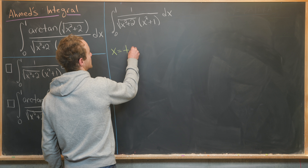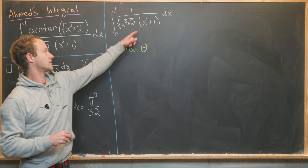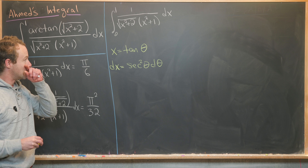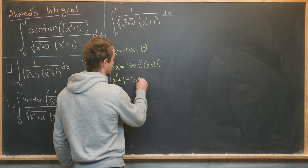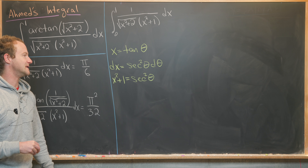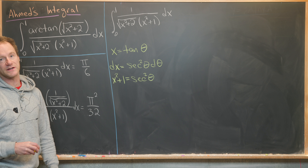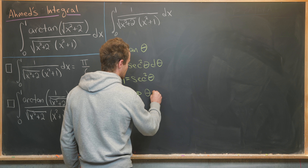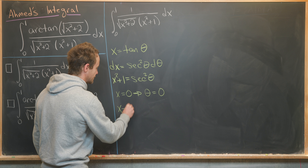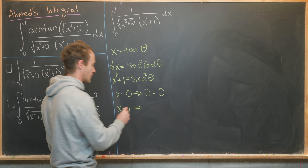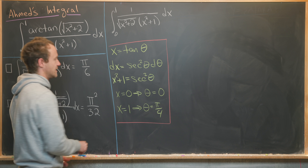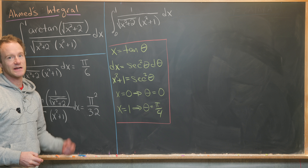Let's let x equal tangent theta — that's the trig substitution you generally do when you see x squared plus one. That tells us dx equals secant squared theta d theta, the derivative of tangent, and x squared plus one is also secant squared theta. So the secant squared from dx and the secant squared from x squared plus one are going to cancel. Furthermore, when x equals zero, tangent theta equals zero so theta is zero; when x equals one, tangent theta equals one, so theta equals pi over four.